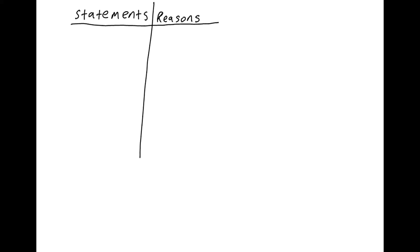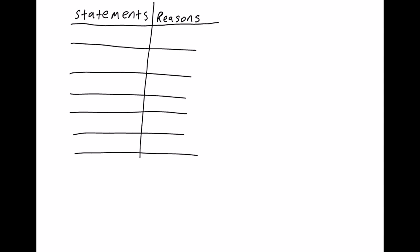So when you write a two-column proof, one column is your statements — you say things that are true, like something is congruent to another thing, or that two lines are parallel, which is usually the end of it. And then the reasons column is why those things are true. You can't say something without backing it up. Each line will be a statement, and then the reason why that thing is true, and so on and so forth.